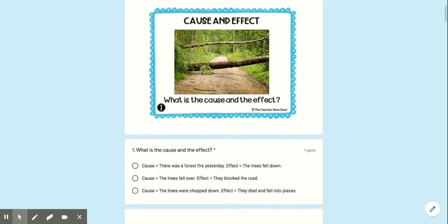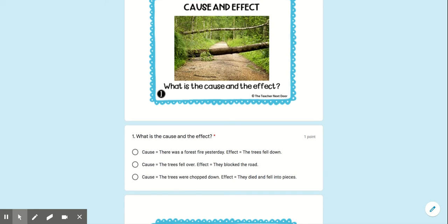What is the cause and the effect? So if we look — there was a forest fire yesterday. Well, I don't see a fire in that picture, so that can't be it. Cause: the tree fell over. Okay, I see a tree falling over. They blocked the road — looks like it's blocking a road to me. The last one says the trees were chopped down. I guess they could be chopped down, we don't know if they fell or not. They died and fell into pieces — well, I don't see them in pieces, so that one doesn't work. Only the second one works.